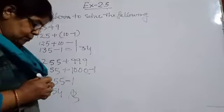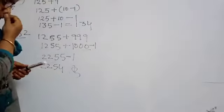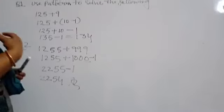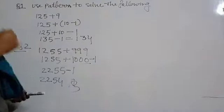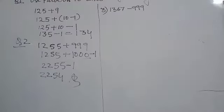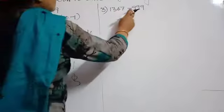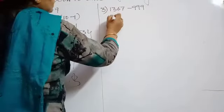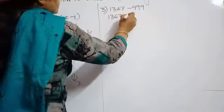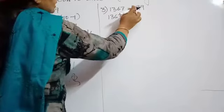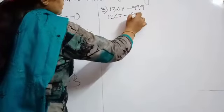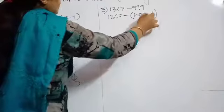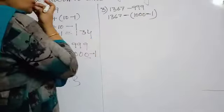I am also going to do one or two subtraction questions and one multiplication question, and then the rest of the questions you will perform yourself. The third question is 1367 minus 999. What we will do: 1367 minus will remain here, and 999 can be written as 1000 minus 1.